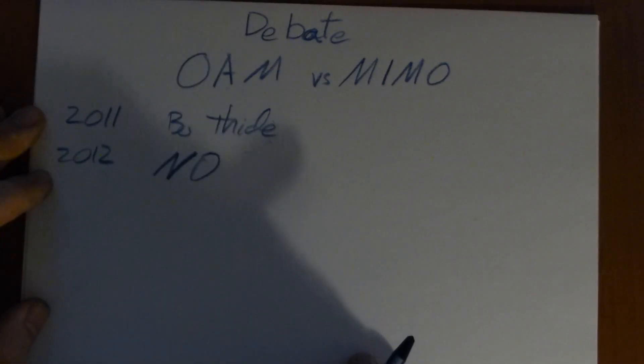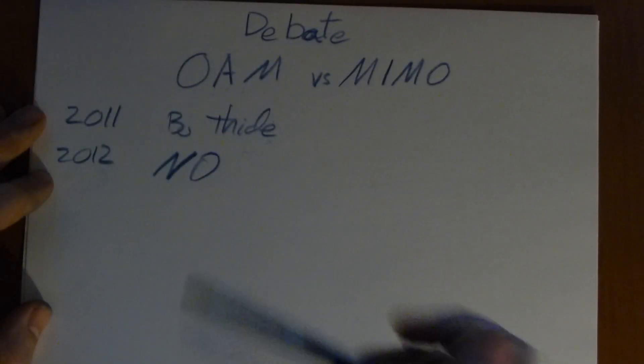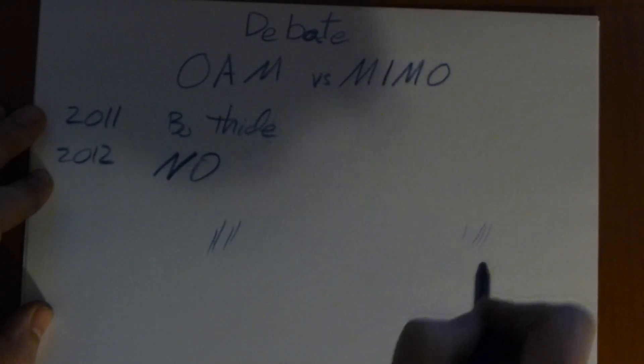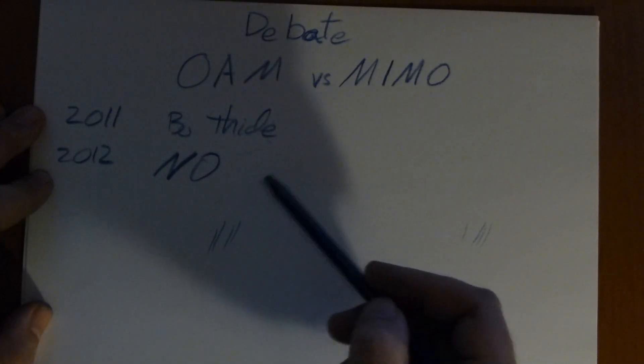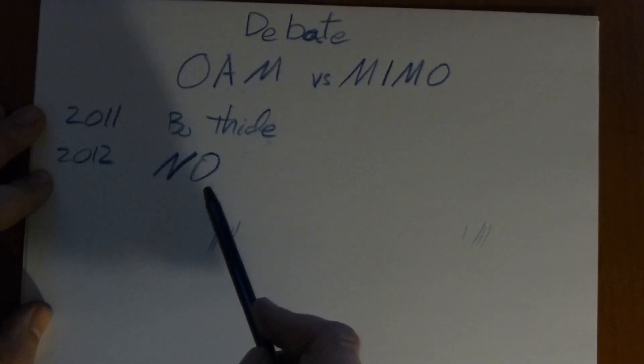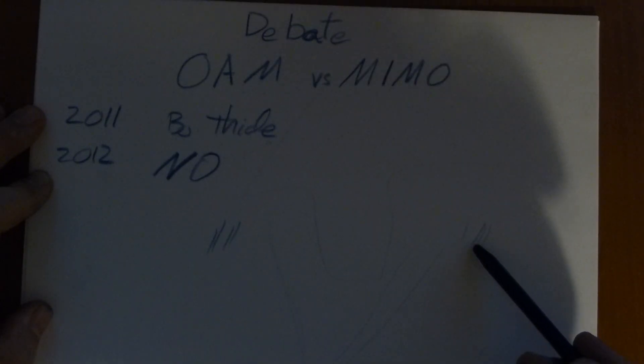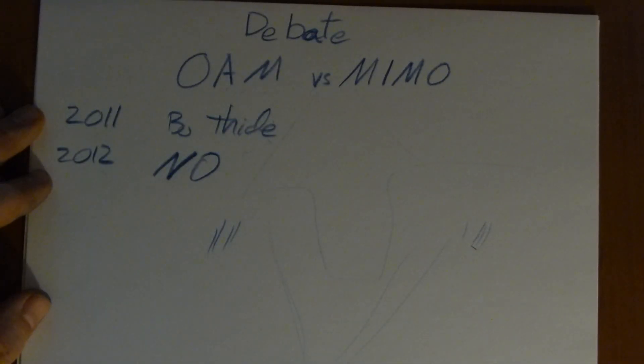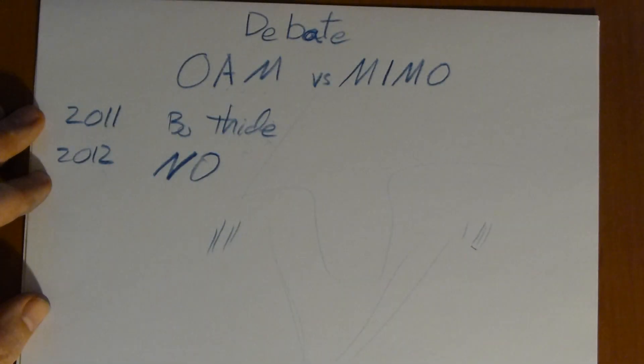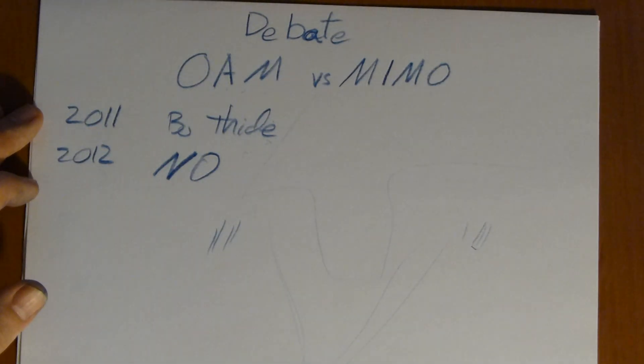Okay, so MIMO, as I said, is a technique for, if we have multiple antennas here, multiple antennas here, or maybe even just two antennas, so we have a complicated environment. Maybe this has to go around an obstacle, or bounce off a wall, or bounce this way, or that way. You can add up all the signals and get a higher quality signal.